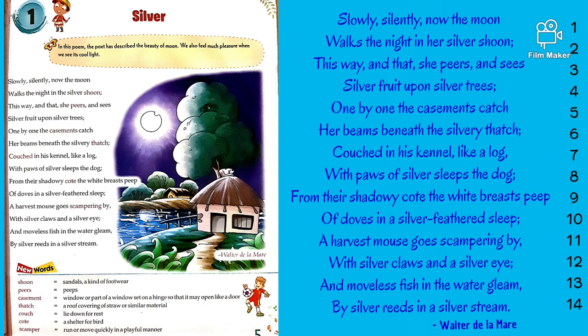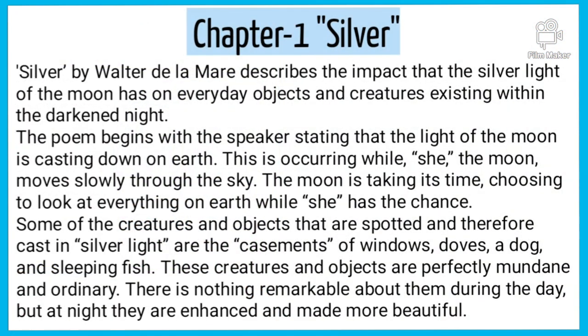As the poet has described all these creatures and objects so beautifully — there is nothing remarkable about them during the day, but at night they are enhanced and made more beautiful because of the silver moonlight. This was the explanation of the poem. I will give you a summary in the next slide. Your word meanings are also given below the poem. You have to write the poem, the word meanings, and the summary — note it down from the slide. Whatever query or doubt you have from the poem, comment in the comment box and I will clarify it in the next video. Thank you.